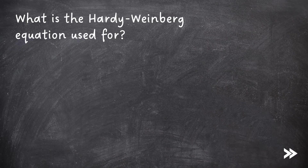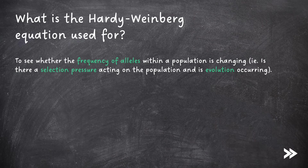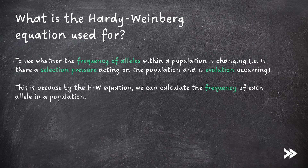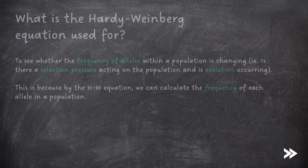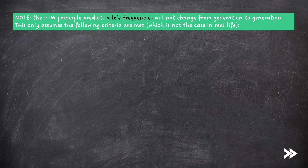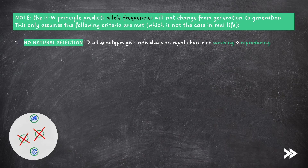Finally, what is the Hardy-Weinberg equation used for? It is used to see whether the frequency of alleles within a population is changing — i.e. is there a selection pressure acting on the population and is evolution occurring? By using the Hardy-Weinberg equation, we can calculate the frequency of each allele in a population. Note that the Hardy-Weinberg principle predicts that allele frequencies will not change from generation to generation, and this only applies if the following criteria are met — which is not the case in real life. It assumes that there is no natural selection, meaning all genotypes give individuals an equal chance of surviving and reproducing.